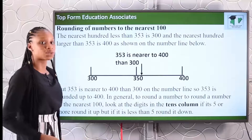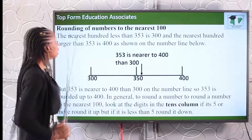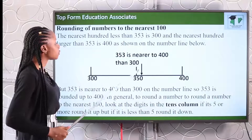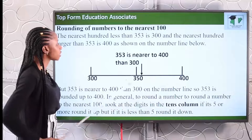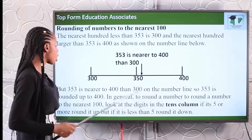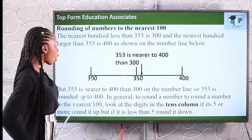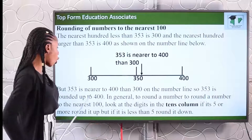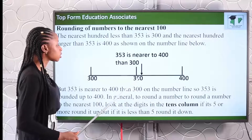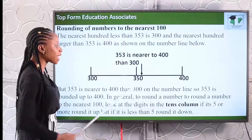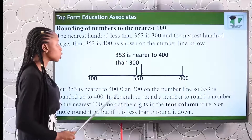Now let's round up numbers to the nearest hundred. On this number line, the nearest hundred less than 353 is 300, and the nearest hundred greater than 353 is 400. We want to round up 353. Since 350 is halfway between 300 and 400, and 353 is more than 350, we say 353 is nearer to 400. So 353 is rounded up to 400.